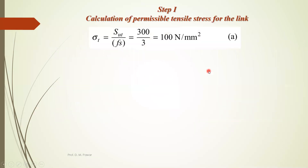Step 1: permissible tensile stress. This cross section will be subjected to tensile stress and bending stress. Permissible stress sigma T equals SUT divided by factor of safety: 300 divided by 3 equals 100 Newton per mm square.